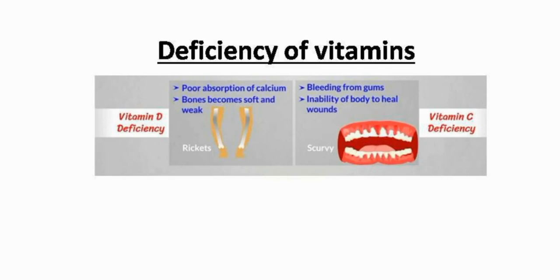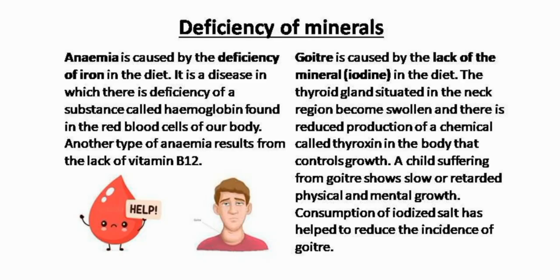Rickets is a disease of bones in children. Children suffering from rickets have bones that become soft and get bent and deformed. In adults, the bones become brittle and can be fractured easily. To avoid rickets, you should take food that is rich in Vitamin D.